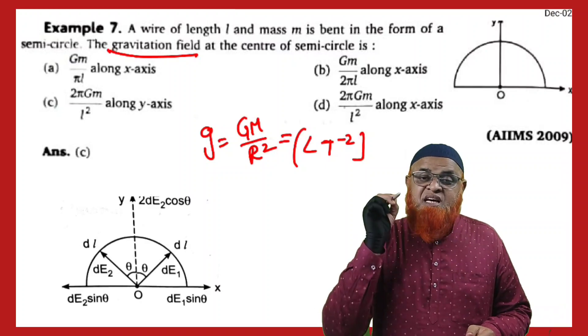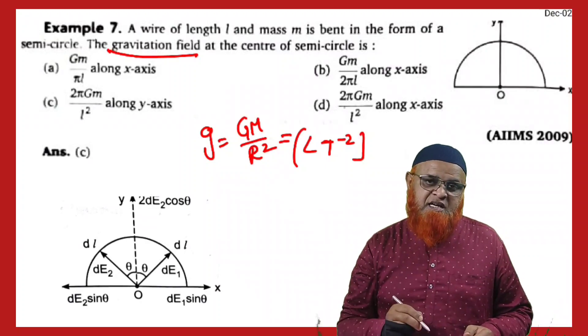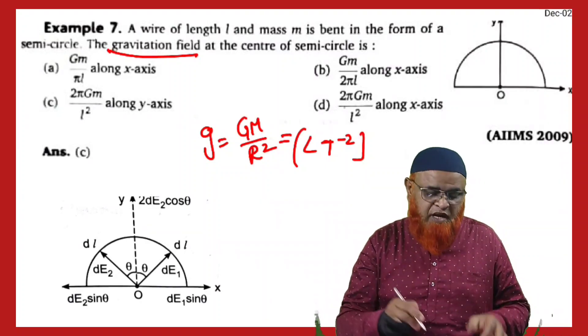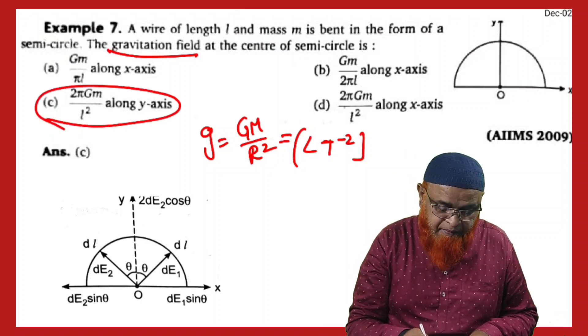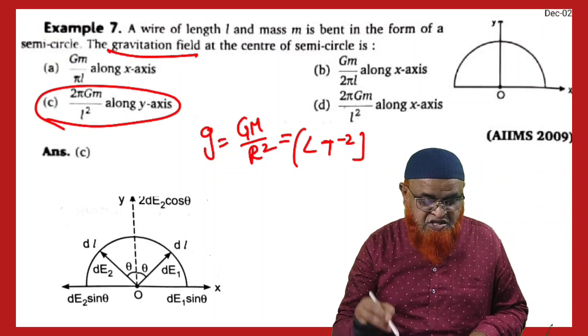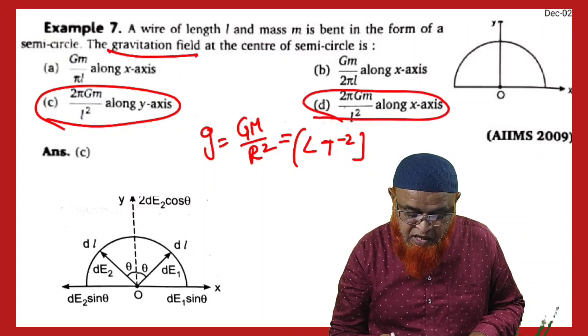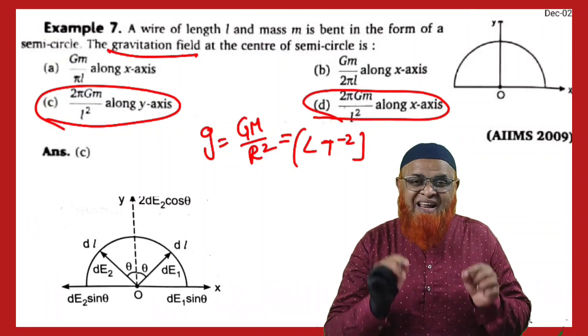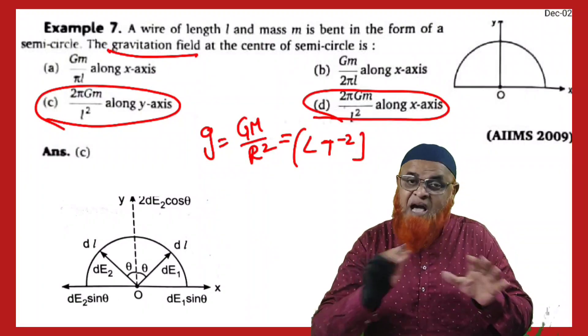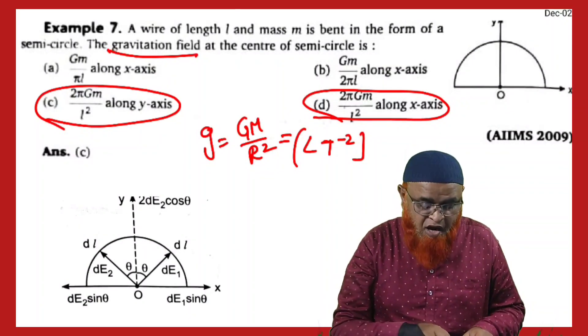So what is GM by R square in this? If you observe here, option C is also having GM by L square, and option D is also having GM by L square. It is as if G equals GM by R square only. So among these two options, which is the correct option you have to select, because already options A and B have been eliminated.